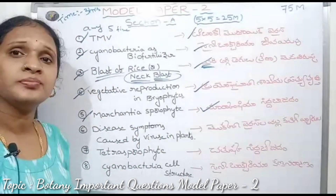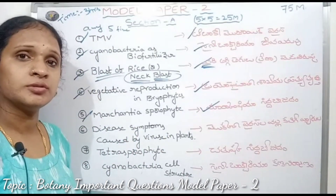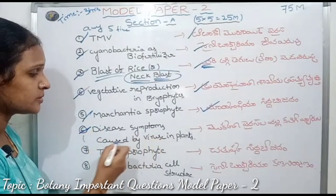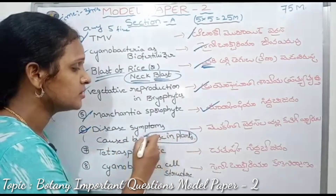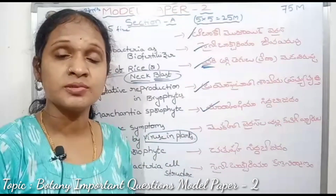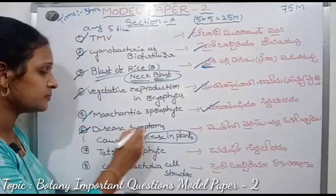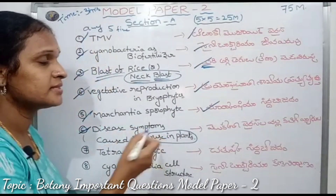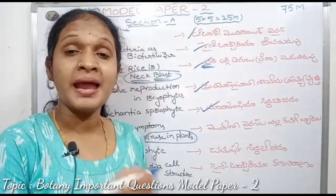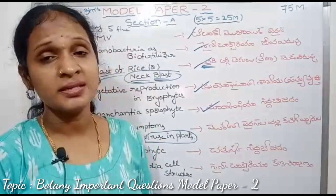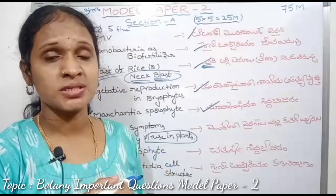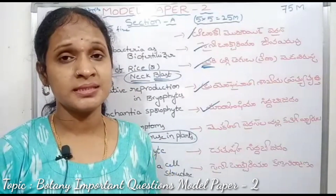Disease symptoms caused by viruses in plants — viral diseases in plants. How many diseases are caused by viruses in plants? Symptoms include chlorosis, mosaic, and different types of diseases depending on the virus.